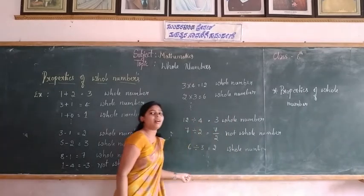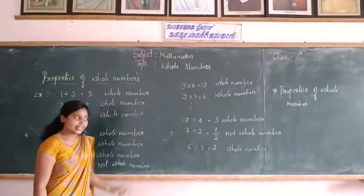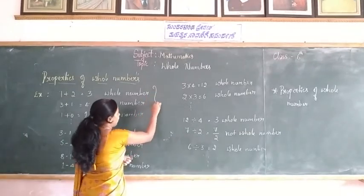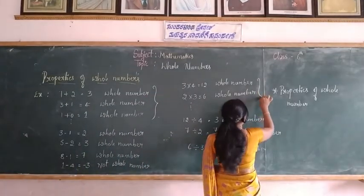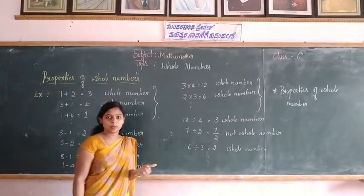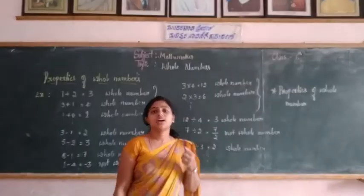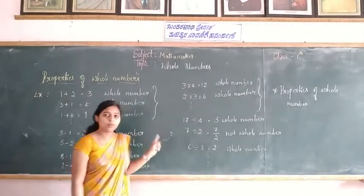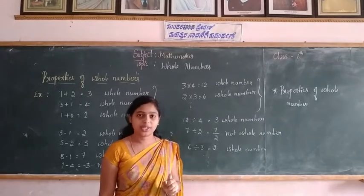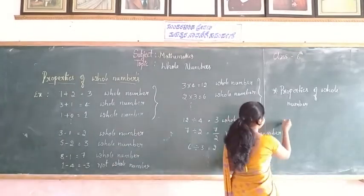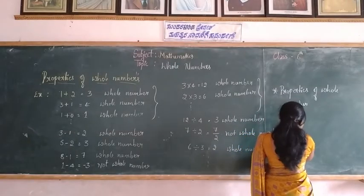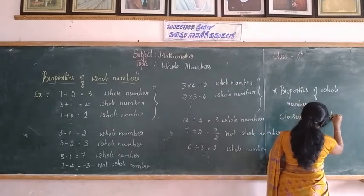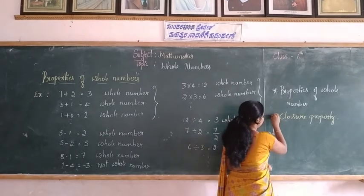What do we conclude from these examples? The whole numbers are closed under addition and multiplication only. This is the property of whole numbers. This property is called the Closure Property. So the first property of whole numbers is the Closure Property. Next, we move on to another property.